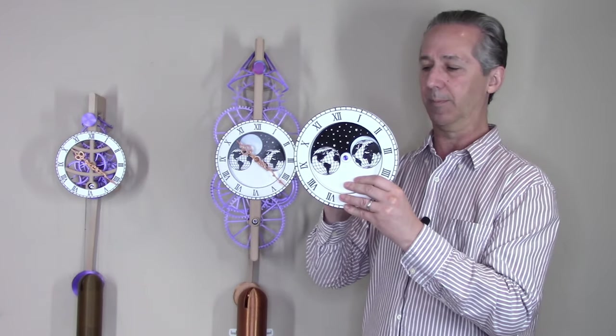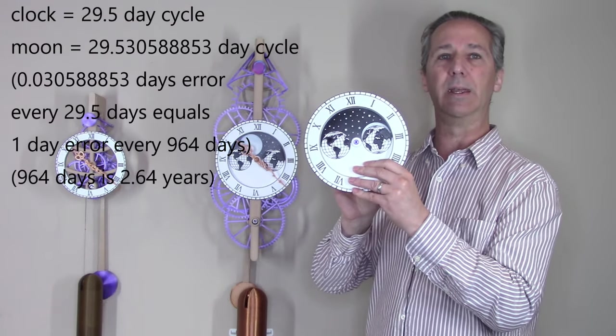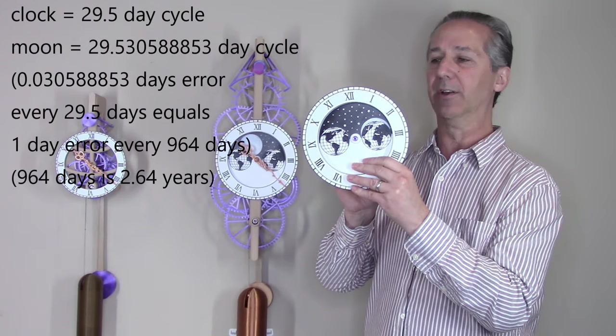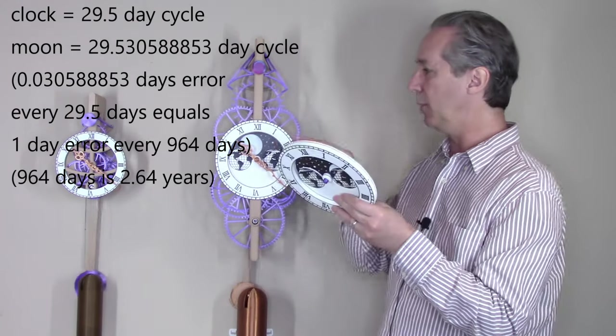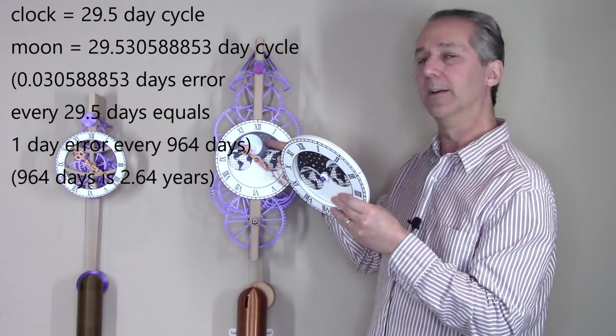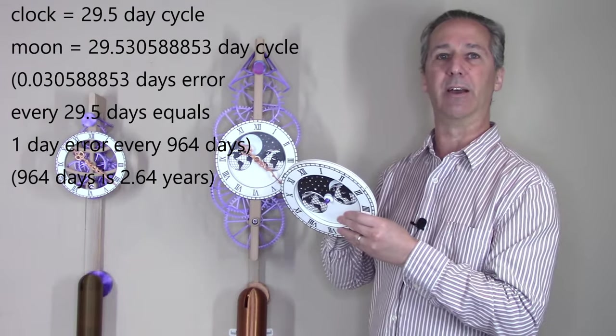So 0.03 days of error accumulates every 29 and a half days. That's what gives the moon phase an accuracy within one day every two and a half years.